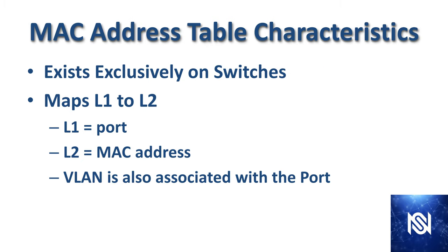First: MAC address table characteristics. The MAC address table exists exclusively on switches — routers do not have a MAC table. The basic function the MAC table performs is layer 1 to layer 2 mappings, where layer 1 is the port and layer 2 is the MAC address. There's also a VLAN associated with the port in the MAC address table.